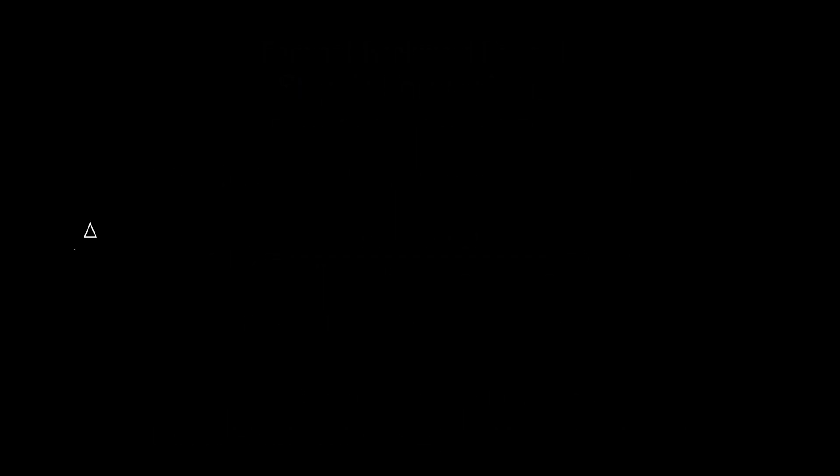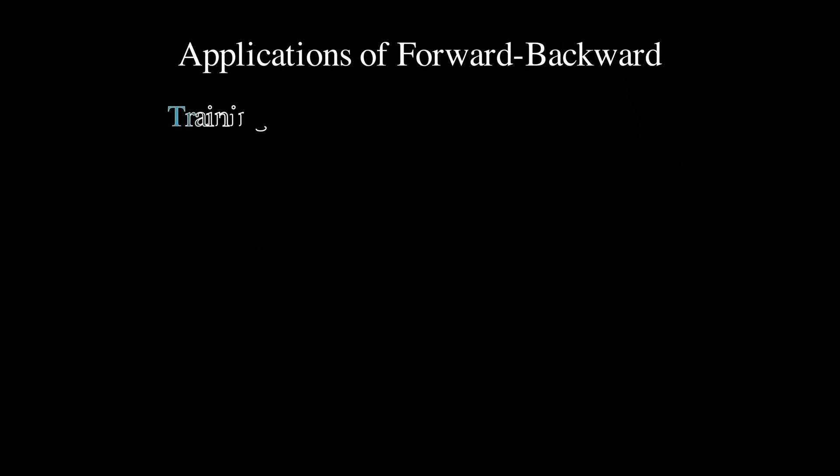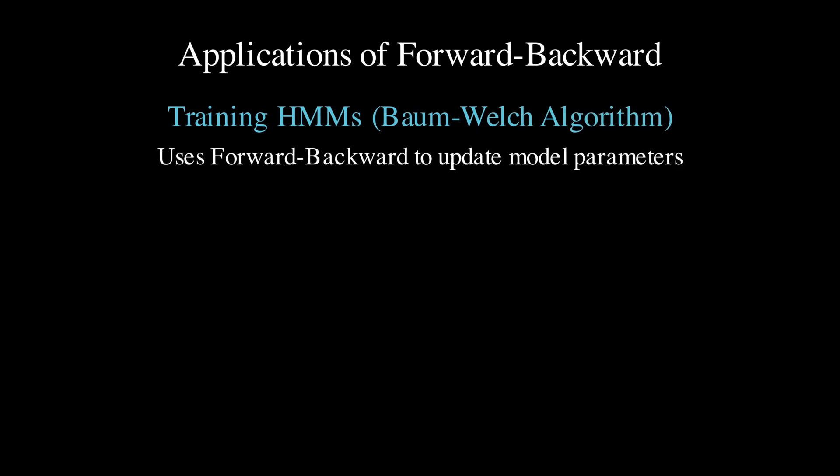The forward-backward algorithm is essential for training hidden Markov models through the Baum-Welch algorithm, which we'll cover in the next video. Because to update our model parameters, we need to know these state probabilities at each time point.